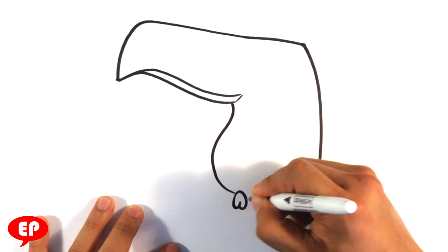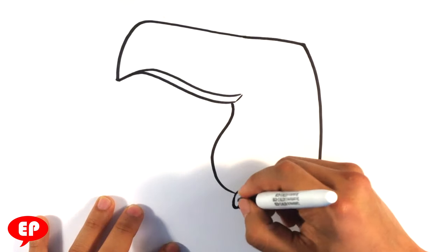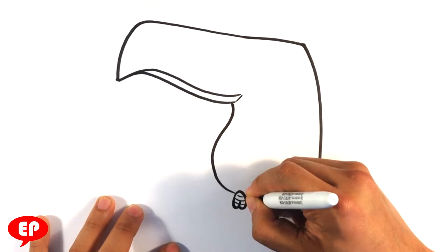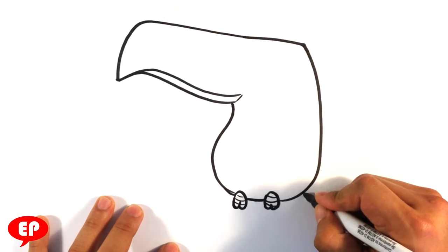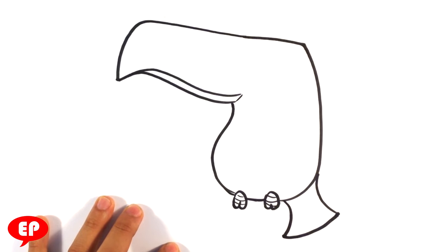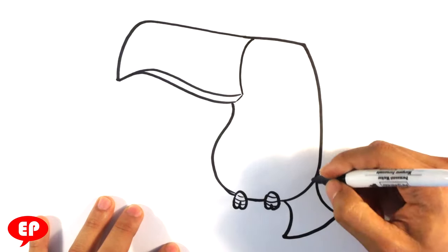And then his feet is going to be grabbing on. His tail. Beak connects.